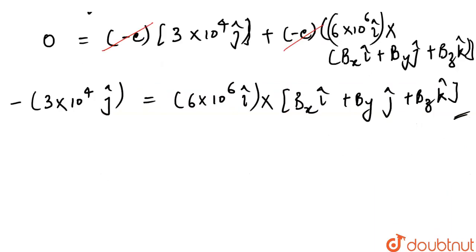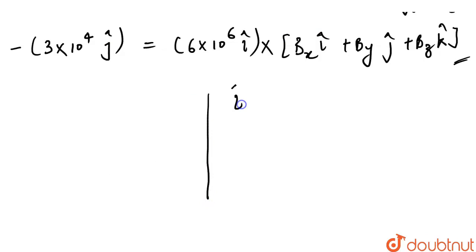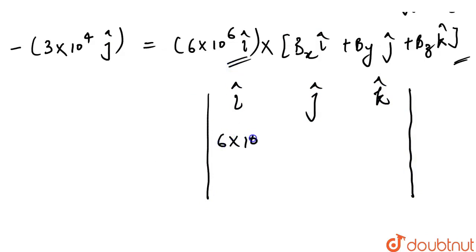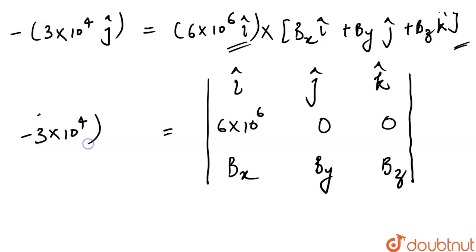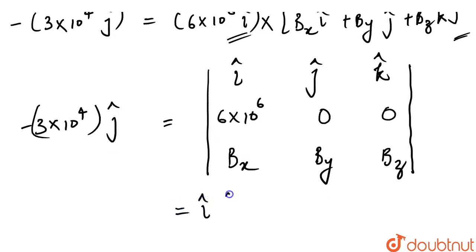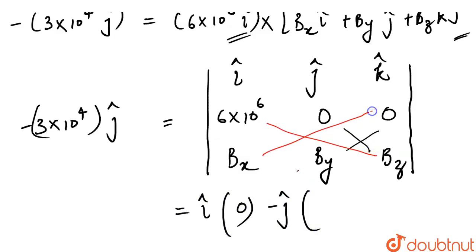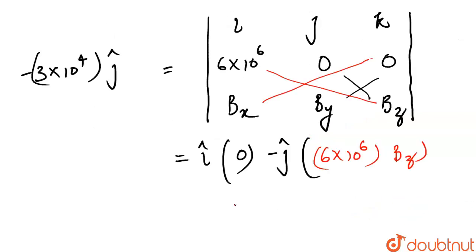Let's solve this cross product using the determinant method: i cap, j cap, k cap in the first row; 6 into 10 to the power 6, 0, 0 in the second row (velocity along x); and BX, BY, BZ in the third row. Expanding: i cap times (0·BZ − 0·BY) minus j cap times (6×10⁶·BZ − 0·BX) plus k cap times (6×10⁶·BY − 0·BX).